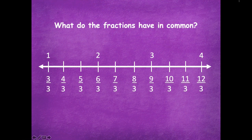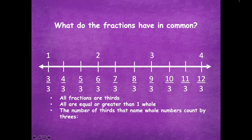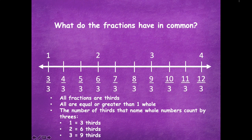What do all the fractions have in common? Think about those fractions: three thirds, four thirds, five thirds, and so on. One thing is all the fractions are thirds — they're all split into three parts. They're all equal to or greater than one whole. And the number of thirds that name each whole count by threes: one equals three thirds, two equals six thirds, three equals nine thirds, and four equals twelve thirds. So they're counting by threes each time to get those wholes.